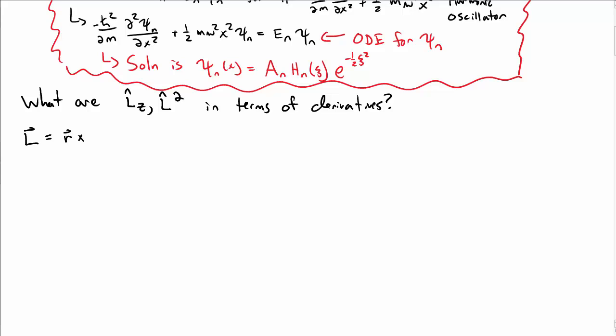So recall that the L vector, the angular momentum vector, is r cross p which in 3D you could write as r vector, not r hat there, cross h bar over i nabla vector or del vector. Where the del vector in spherical coordinates you'd write r hat d by dr plus theta hat 1 over r d by d theta plus phi hat 1 over r sine theta d by d phi.